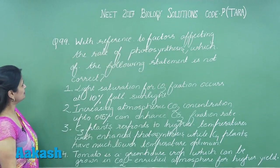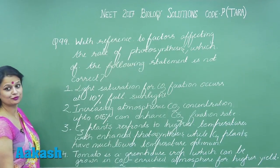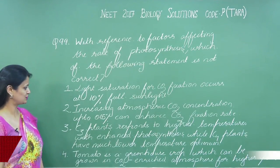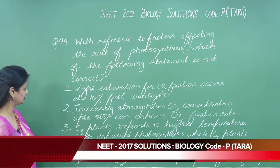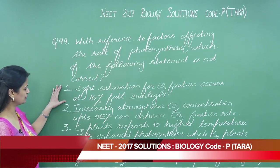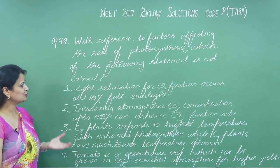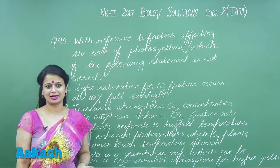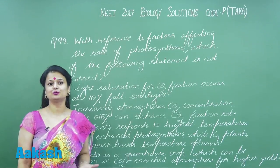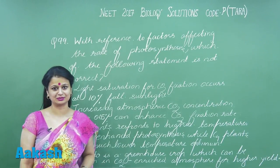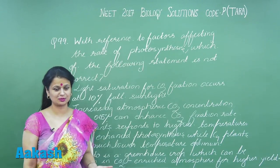In question number 99, we have to look for the option which is incorrect with respect to photosynthesis. The first option states that only 10 percent of full sunlight is required to perform maximum photosynthesis — this statement is right.